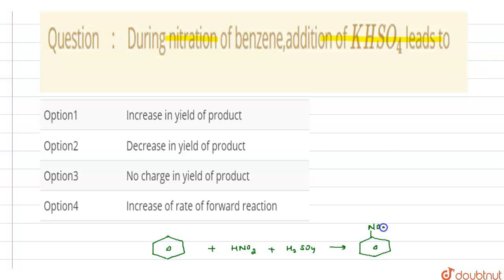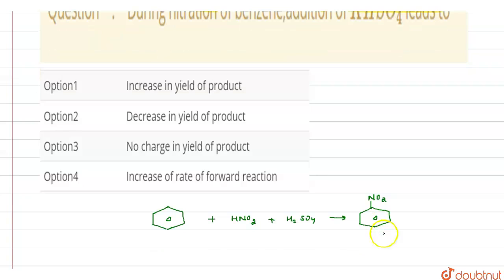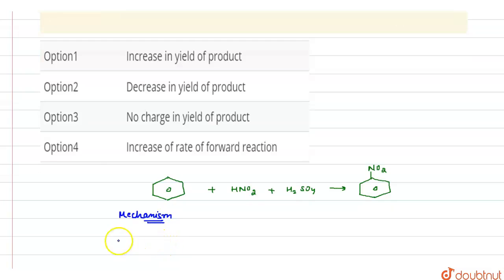But during this reaction mechanism, when we see the mechanism of this reaction, both H2SO4 and nitric acid are involved. Due to this, HNO3 exists in this form and H2SO4 as HSO4.